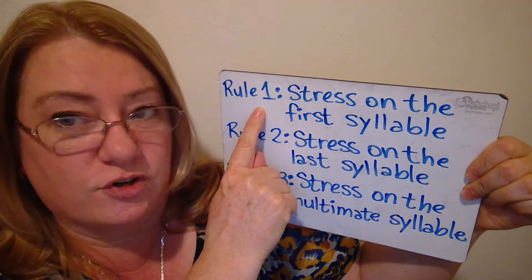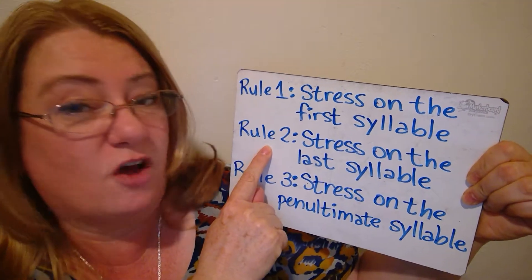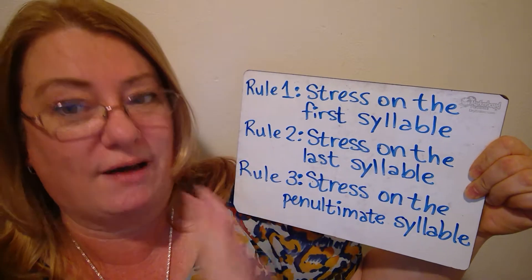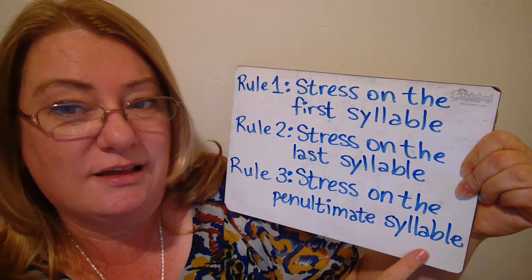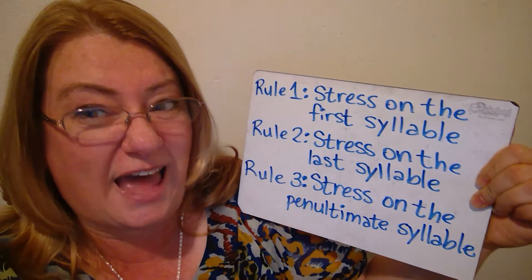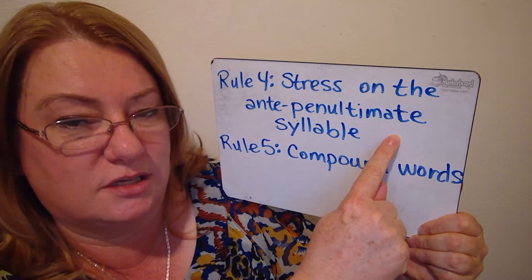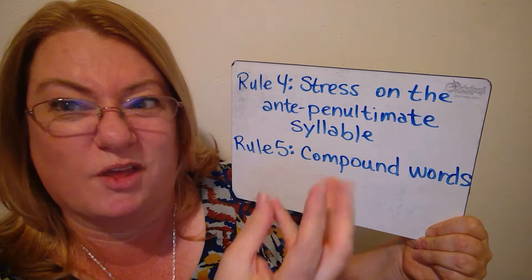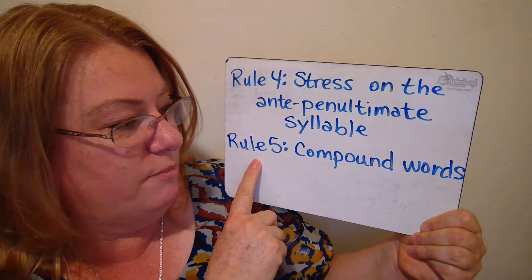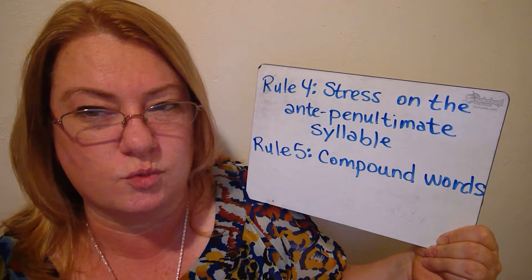The stress is on the first syllable — we'll have a lesson about that. The second rule: the stress is on the last syllable — we will have a lesson. Rule three: the stress is on the penultimate syllable, the second to last syllable. Rule four: the stress is on the antepenultimate syllable, the third one before the last. And then rule five: compound words — which one, where's the stress on those words?